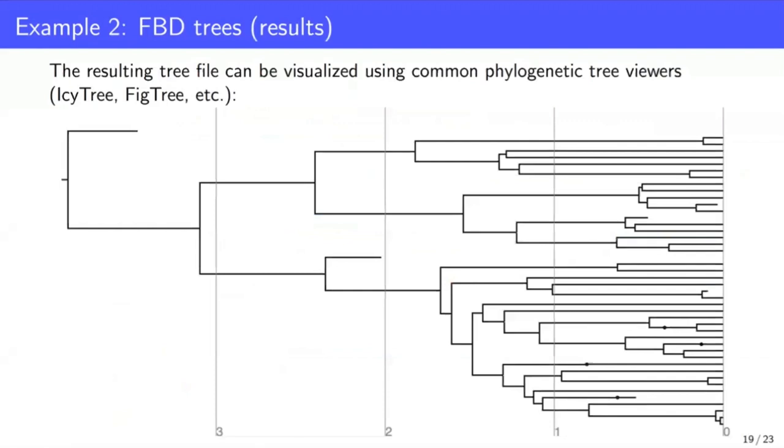So once that's run, we get this tree file. We can load that into IcyTree or FigTree or your favorite tree visualization tool. And we can see the outcome of the simulation. We can see that we have some samples, some tips that are appearing through time, and these dots correspond to samples that are collected through time as well. And then we have all of our samples at the present.